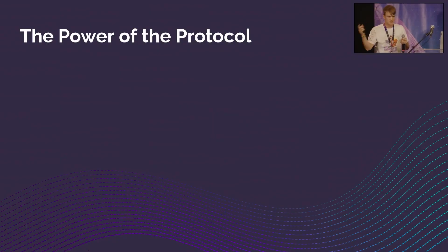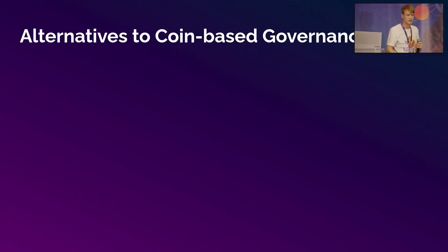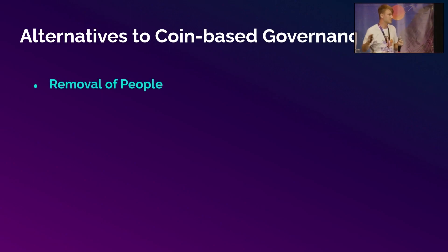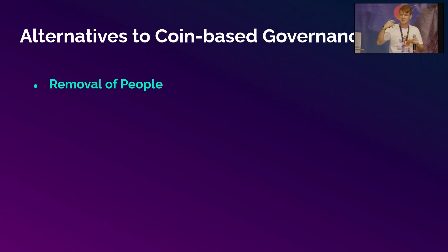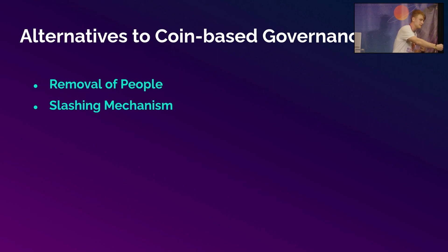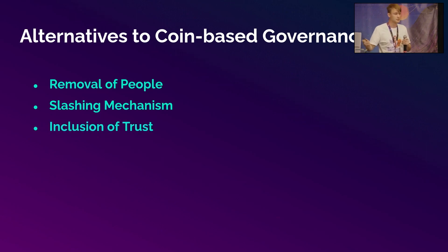There is an alternative to coin governance — three alternatives. First, I want to mention the power of the protocol. It's not the protocol that governs the community — it's the community itself. The three alternatives: there's the removal of people, where you take away governance and say we have a smart contract — if you want to do anything you can make changes, but it has to be a fork. This is good if the protocol doesn't change, but typically in the advancing DeFi space a lot of things need to adapt. Another case is a slashing mechanism — you stake your tokens and hope the proposal gets passed; if it doesn't, you lose the stake. Unfortunately this decreases engagement, and what we want is more effective decisions. There's a third option: the inclusion of trust, which we'll explore further.